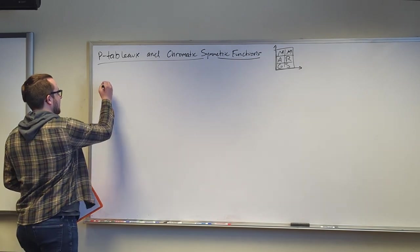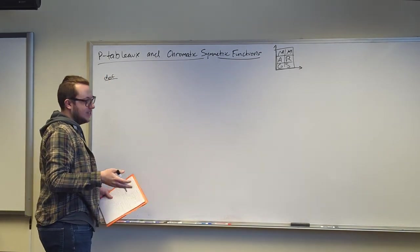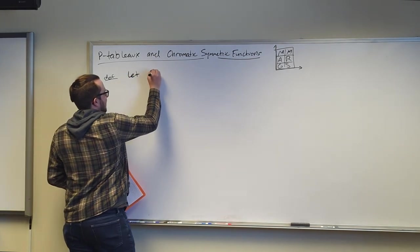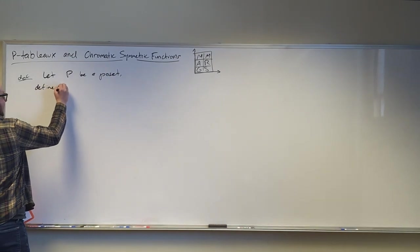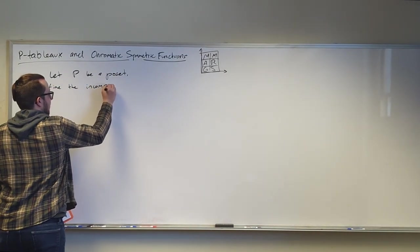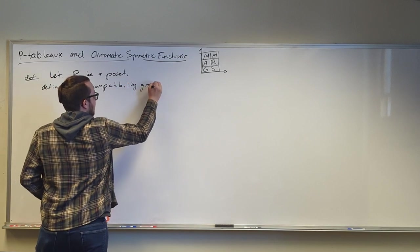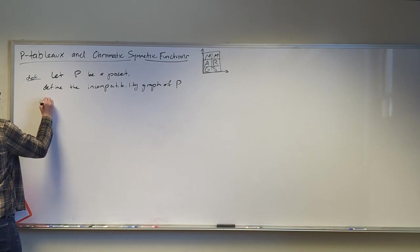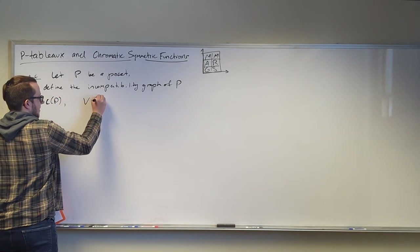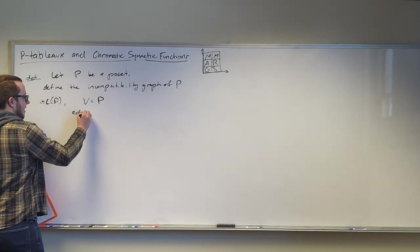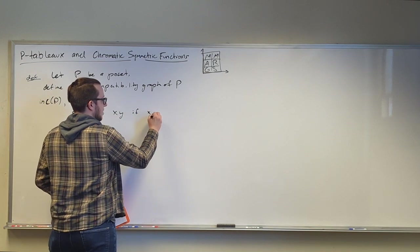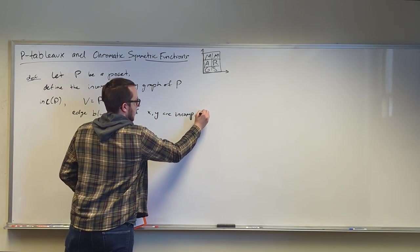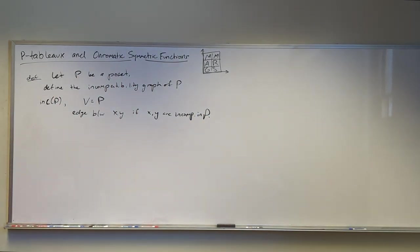So, all right, we've seen a lot of these definitions before, but let's redefine them again. I mean, who's going to go back and watch the last YouTube talk? All of our subscribers. Let's let P be a poset. We're going to define the incompatibility graph. So if x and y are incompatible, we get inc of P, it has a vertex set just defined by elements of your poset and an edge between elements x and y if they are incomparable in your poset.